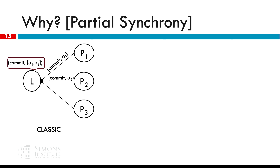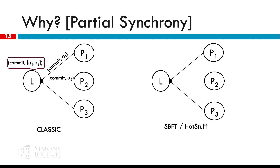That message is linear in size — a linear size message to a linear number of parties gives us quadratic complexity. What SBFT and HotStuff do is, in the same kind of protocol, the parties use their secret share to sign their commitments. The leader is going to combine all those secret shares into a constant size signature, which is then sent back. As a result, this works in the linear case.